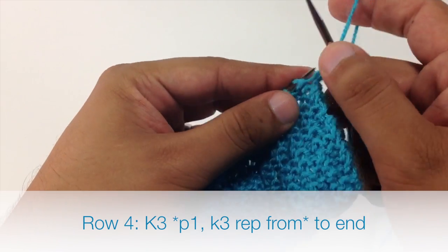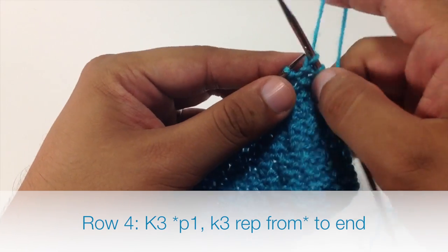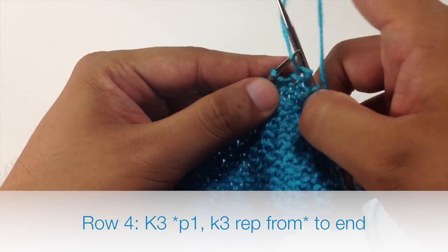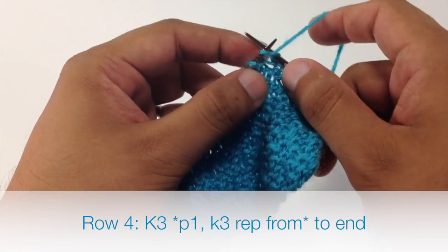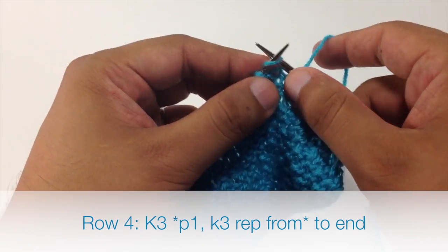Then we will start our repeat by purling 1, and then we will finish up by knitting 3. So we will continue purling 1 and knitting 3 all the way across.